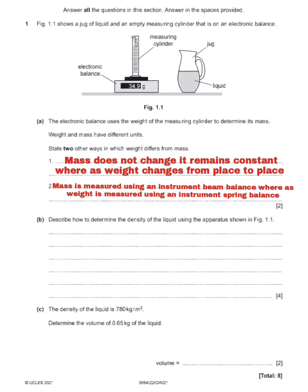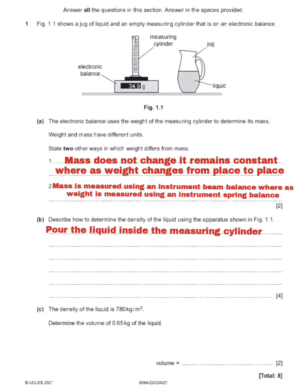For part B, the question says: describe how to determine the density of the liquid using the apparatus shown in figure 1.1. We are determining the density of the liquid inside the jug. The first step is to pour the liquid from the jug into the measuring cylinder, then take the reading for the volume of the liquid.